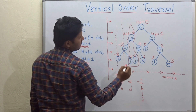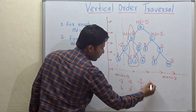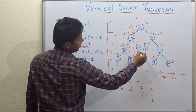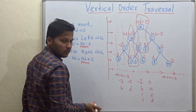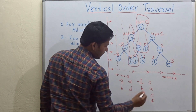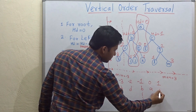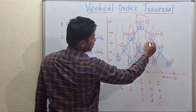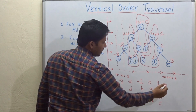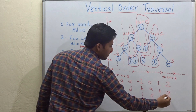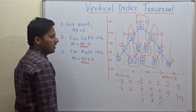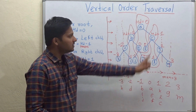For distance 0, the nodes are a, e, and f — forming that vertical line. For distance 1, the nodes are k, l, and c. For distance 2, g is the node. And for distance 3, m is the node. In this way, we have traversed all the vertical lines in this binary tree, which is called vertical order traversal.